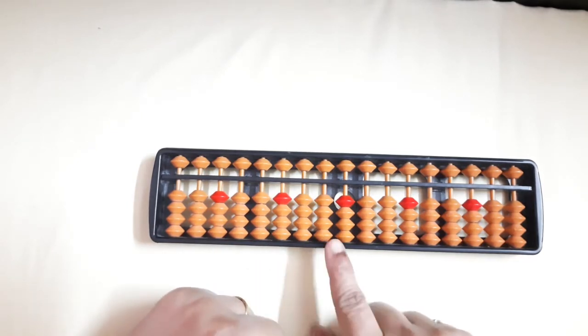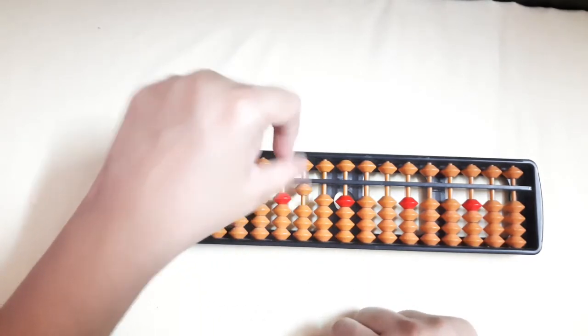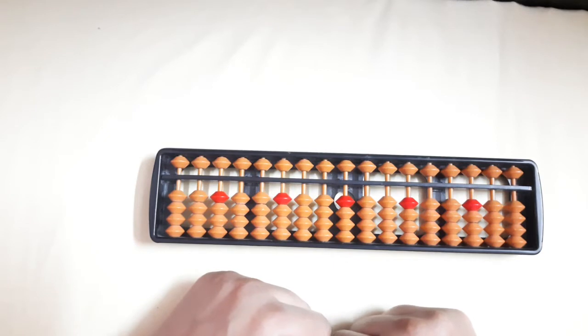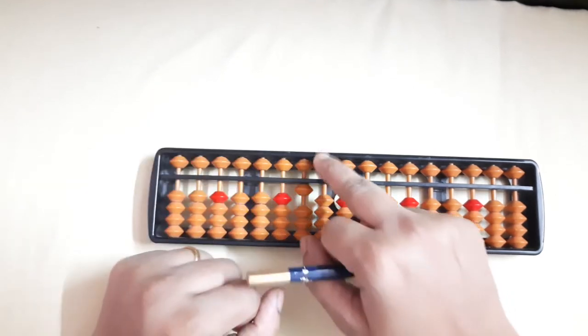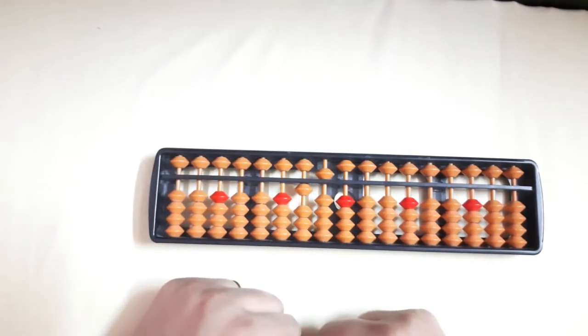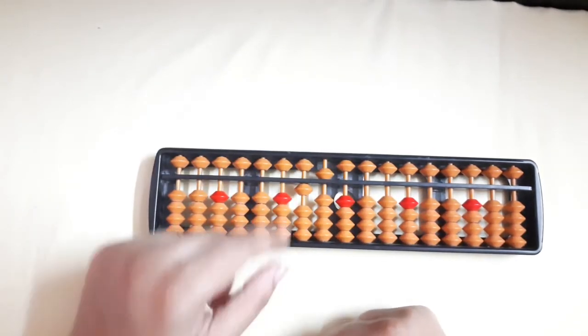The same way, 100, 1, 0, 0. So 100, 1, 0, 0 is 100. Now if we say 150, 1, 5, 0. So 1, 5, 0, 150.